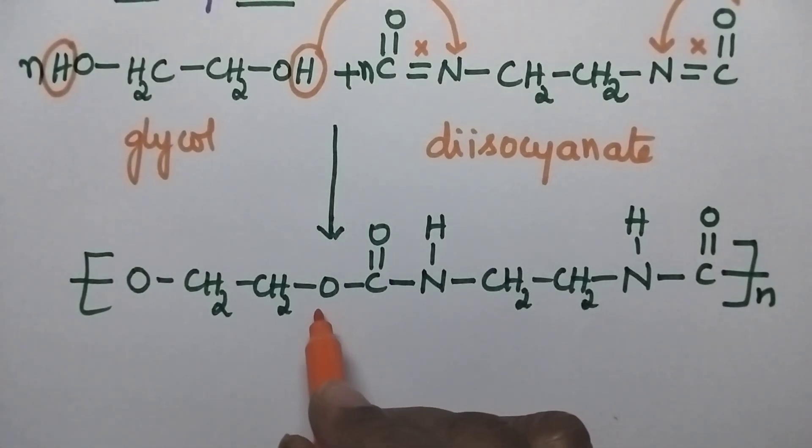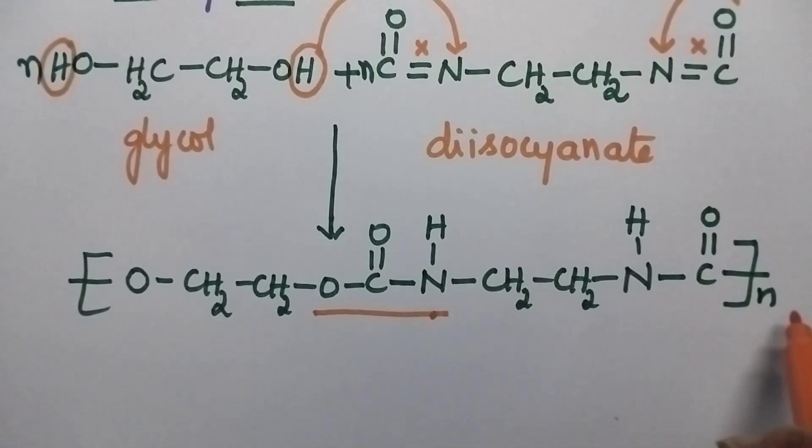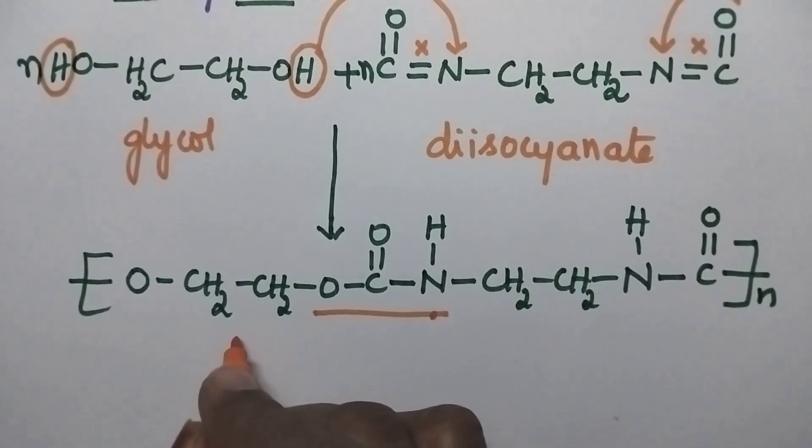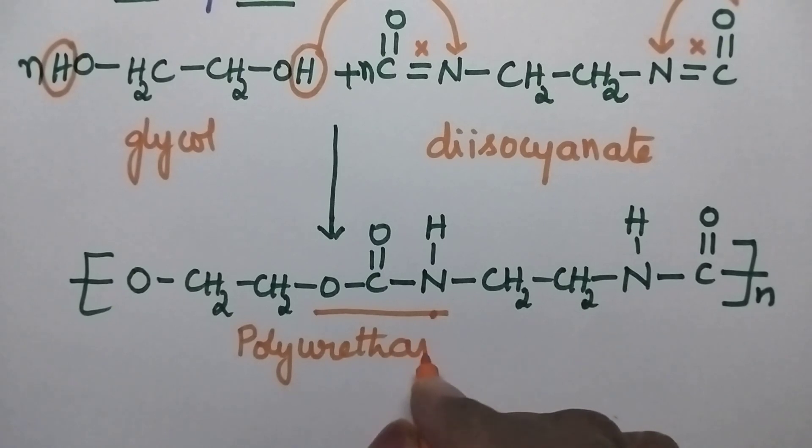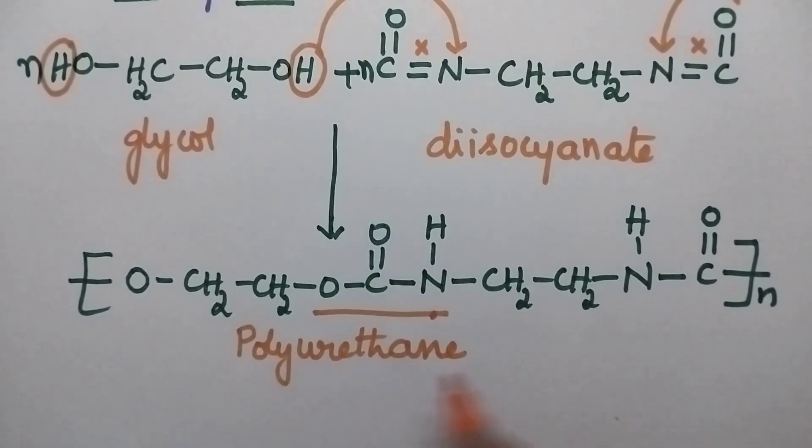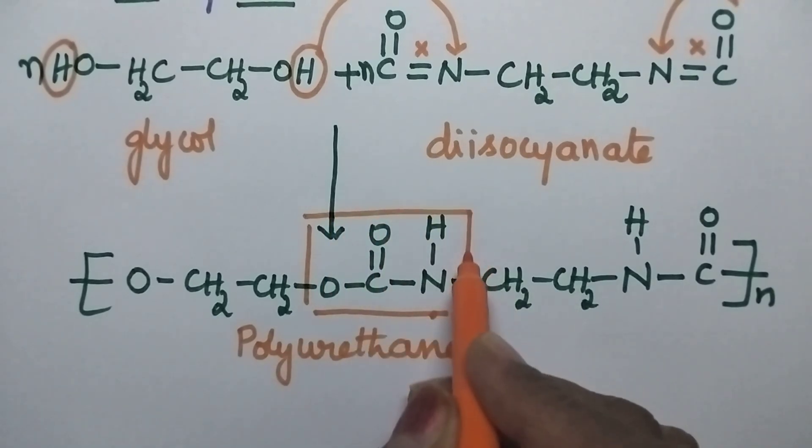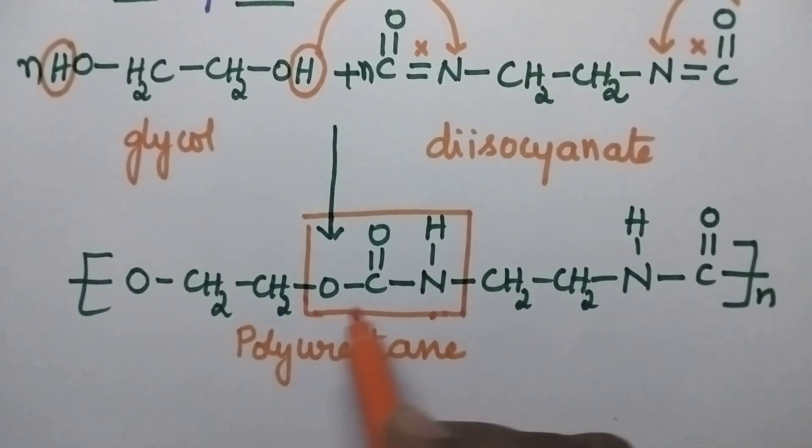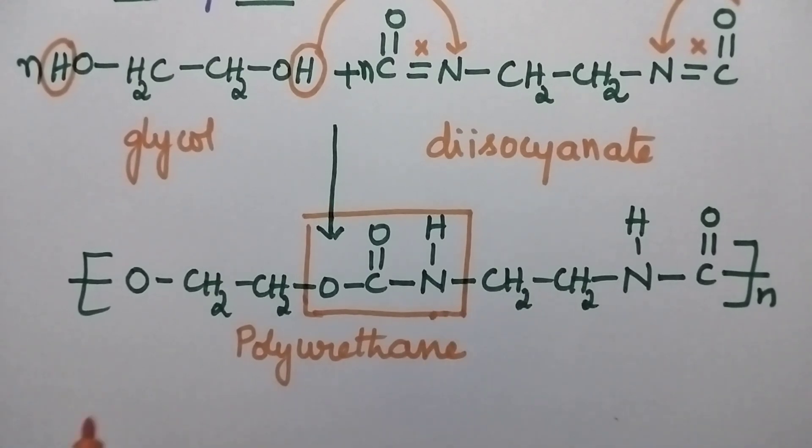When we carefully observe here, urethane linkage is present and that will be repeated N number of times. That is why simply it can be called as polyurethane. Urethane means the NOCH2CH group is called the urethane link. Polyurethane is also known as foam rubber.